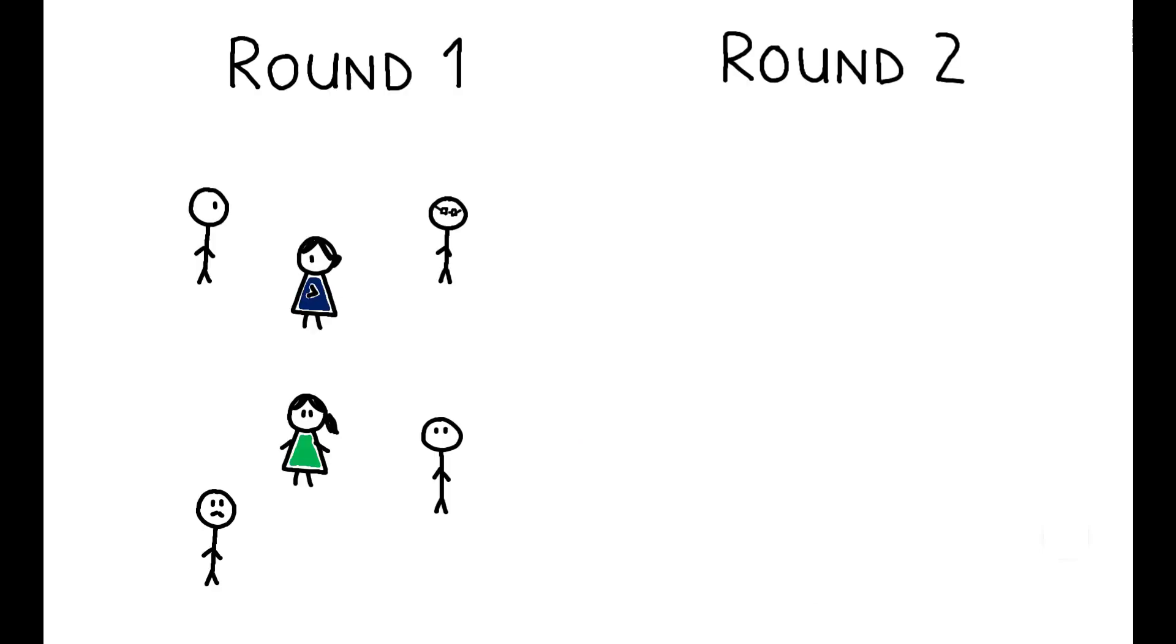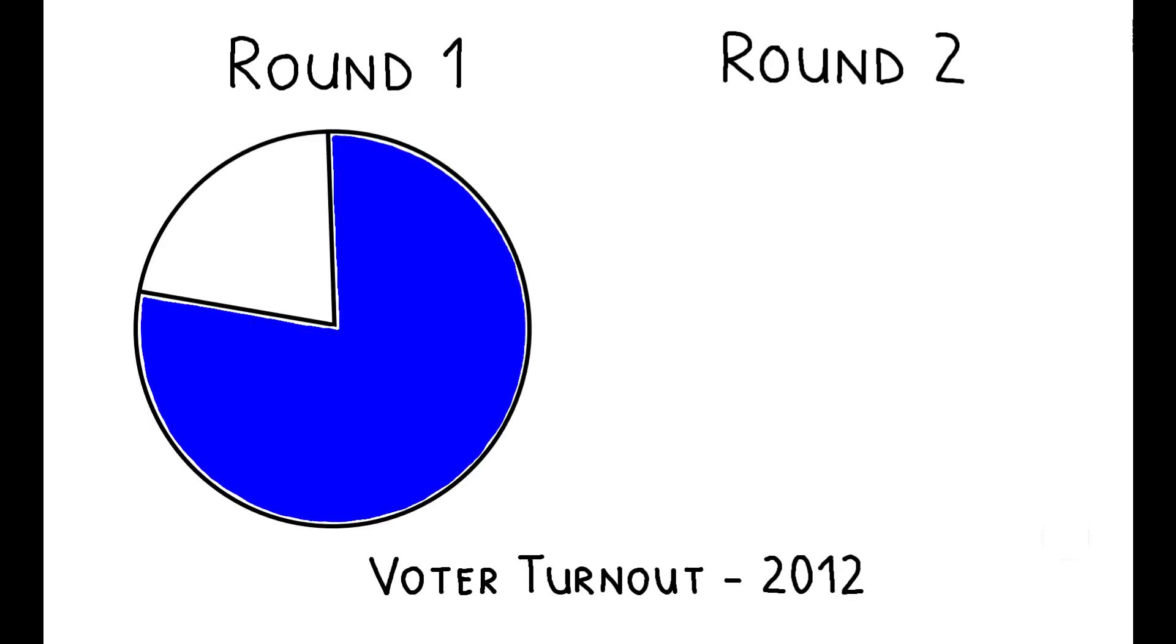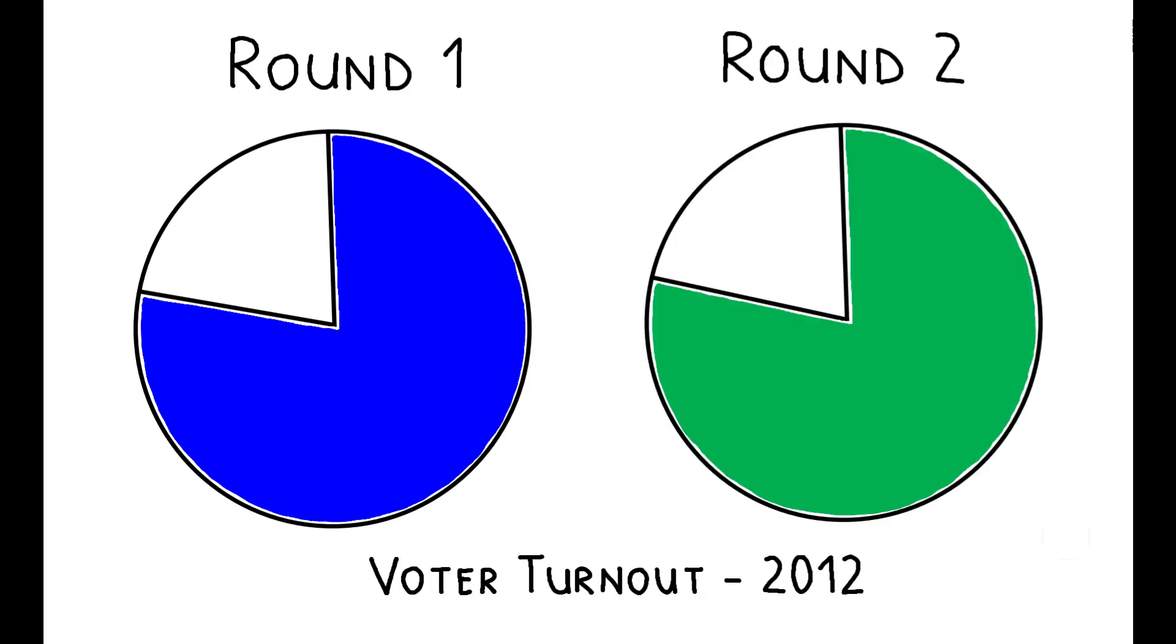Let's start with some relevant background. Presidential elections in France have two rounds, where the two candidates with the highest vote shares in the first round proceed on to a runoff in the second. Voter turnout is typically high. In 2012, 79.5% of registered citizens voted in the first round of the presidential election, and 80.4% voted in the second.